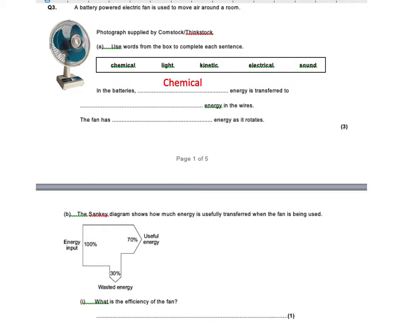So in batteries, chemical energy is transferred to electrical. Now I've got a problem with this question. It says energy there, okay, but we know that that's how it's transferred. It's not an energy store. In the wires, and then the fan has kinetic energy as it rotates. So we know that bit is a store. So just watch out for those kind of things. This is an old question. Electrical energy doesn't exist. It's a way of transferring it. But anyway, on to the next one.